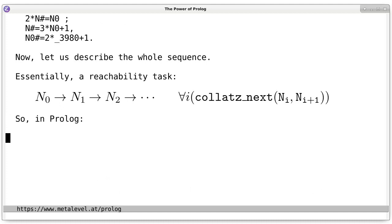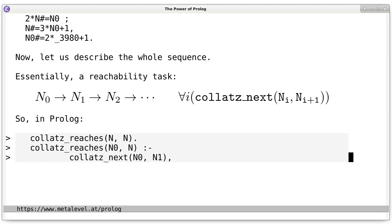And this is quite easy to define in Prolog. For example, we can say if we are at some integer n, then we can reach n. And if we are at some integer n0, then we can reach another integer n if we can reach n1 from n0 in one step. So, if collatz_next of n0 and n1 holds. And from there, if we can reach n from n1. So, if collatz_reaches n1 and n holds. Because if these both hold, then we can reach n from n0. And that's all.